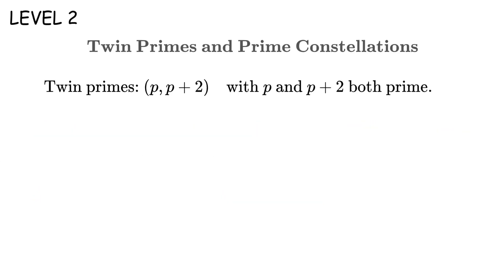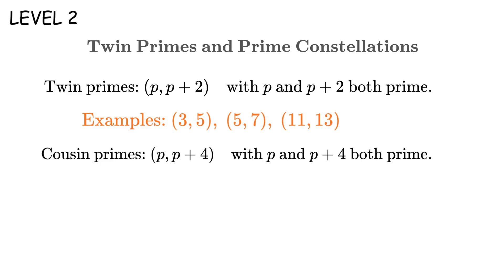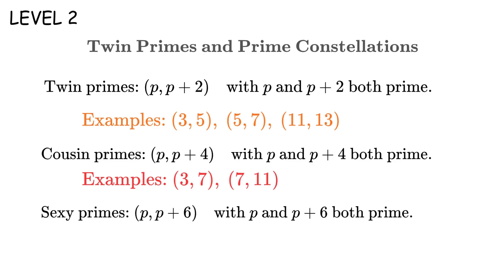Level 2. Twin primes are pairs of primes that differ by exactly 2. So 3 and 5 are twin primes. 5 and 7 are twin primes. 11 and 13, twin primes. Now we've also got cousin primes, which differ by 4, like 3 and 7, or 7 and 11, and sexy primes, which differ by 6, like 5 and 11, or 7 and 13. The name comes from the Latin word for 6. Sex.